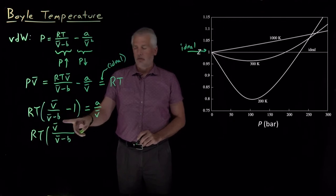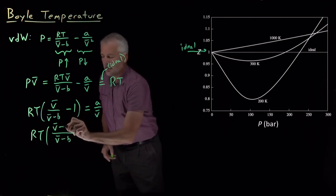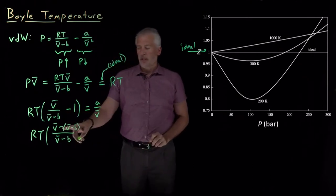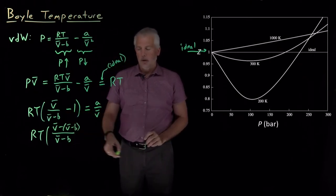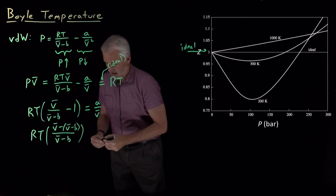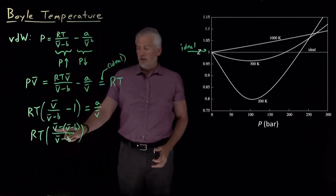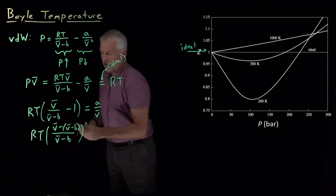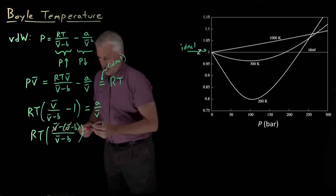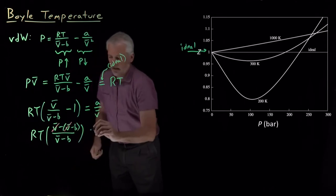So this minus 1 is minus V-bar minus B over V-bar minus B. And then I can see that I'm going to have some cancellation. V-bar minus V-bar is going to cancel.